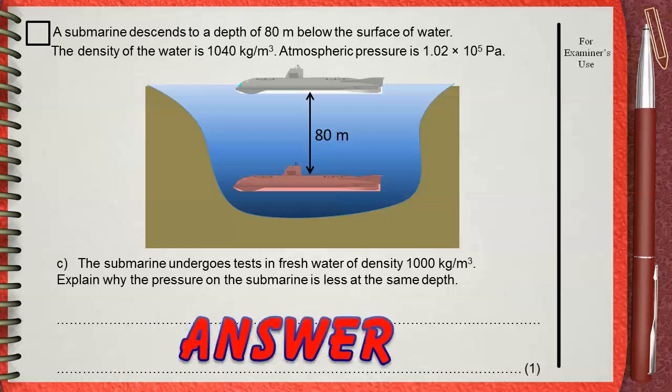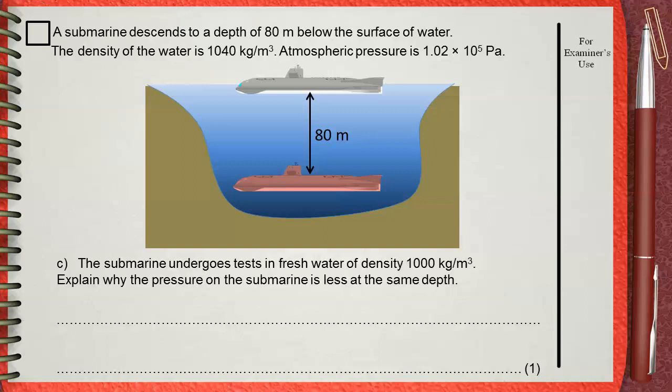If you look in the previous question, the density of seawater was 1040. Freshwater is less dense. It's 1000 kilograms per meter cubed. This smaller density makes the pressure to be smaller.